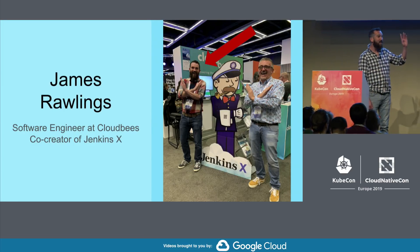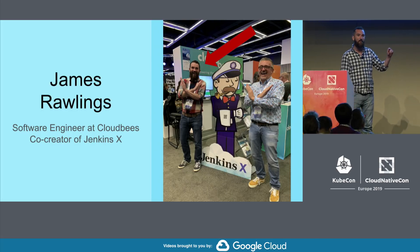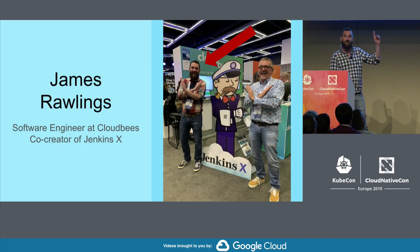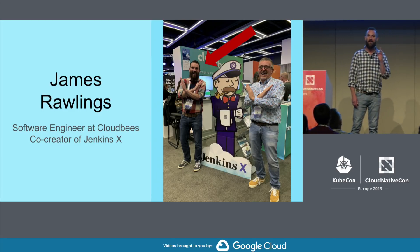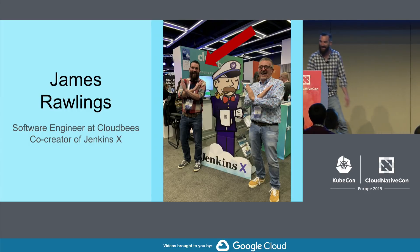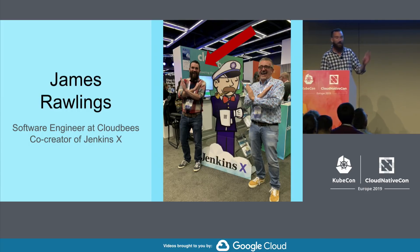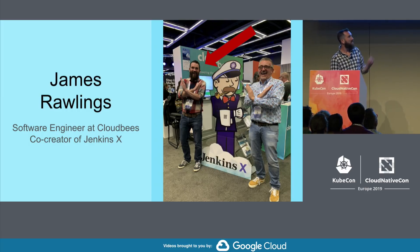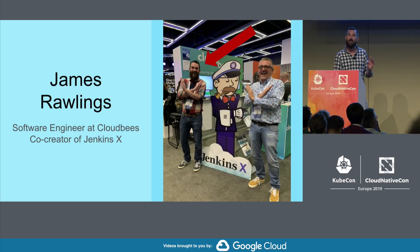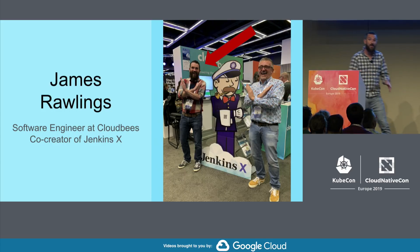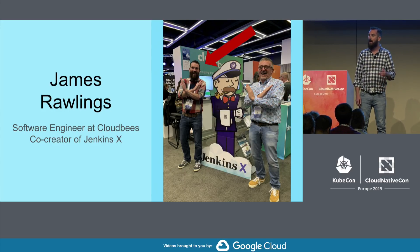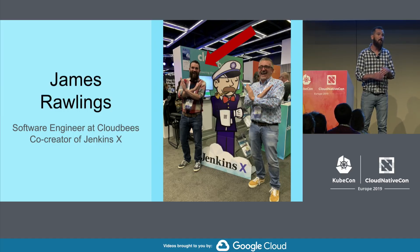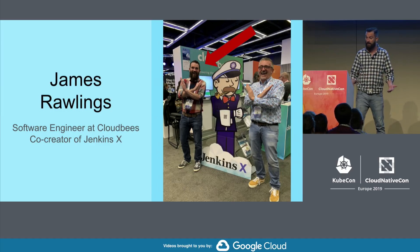So, this is me, James Rawlings. I'm on the left. I work for CloudBees. I work on an open source project called Jenkins X. I've been working for the last couple of years trying to help other developers go faster.